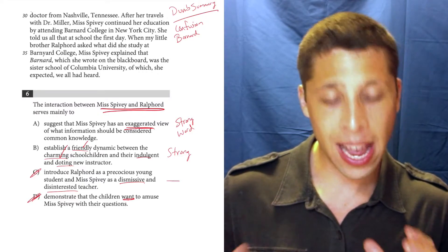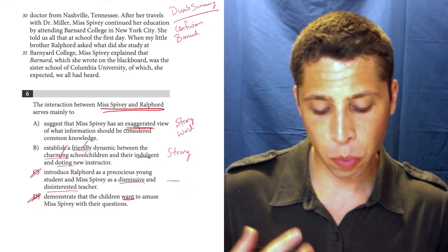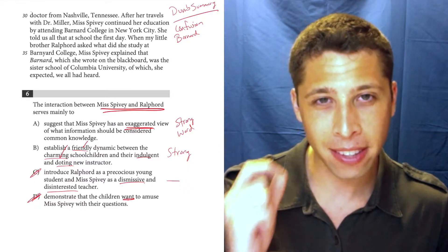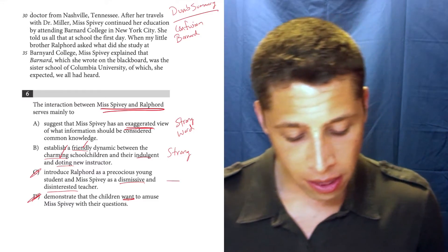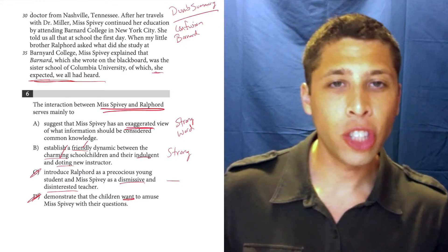Whereas, choice A is this word exaggerated, and we're talking about what information should be considered common knowledge. And if we go back to the lines, there is a key phrase here.